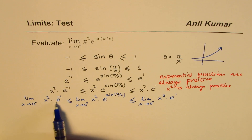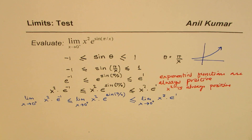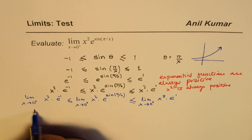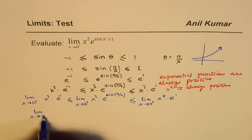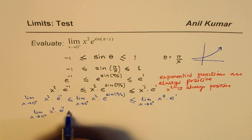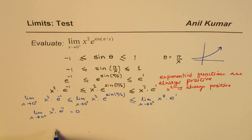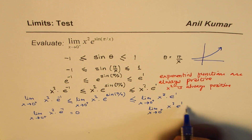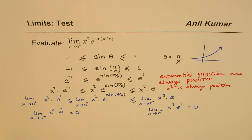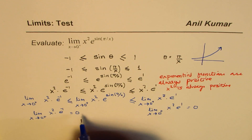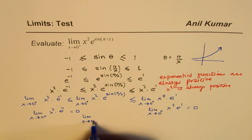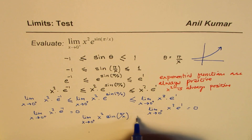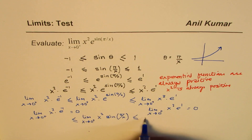E to the power of 1 and e to the power of minus 1 are numbers. And x squared, when x approaches 0 from the positive side, is 0. Since we know the limit when x approaches 0 from the positive side for x squared times e to the power of minus 1 equals 0, and the limit for x squared times e to the power of 1 is also 0, both boundary limits are 0. So the limit of x squared e to the power of sine pi by x is between 0 and 0.